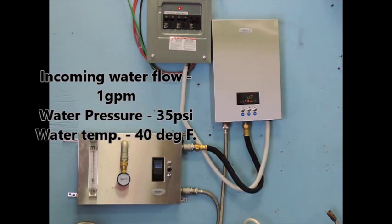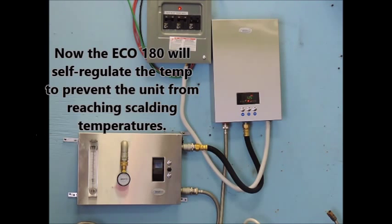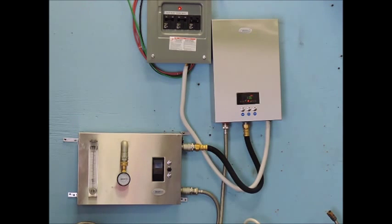Now, bringing the water flow down to a gallon per minute, still with 35 psi and a water temp of 40 degrees Fahrenheit, we are hitting the max set point of 125 degrees. The unit will no longer heat any further.